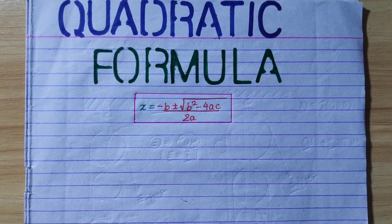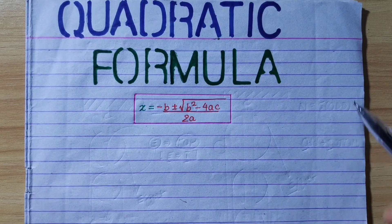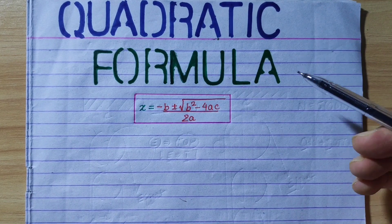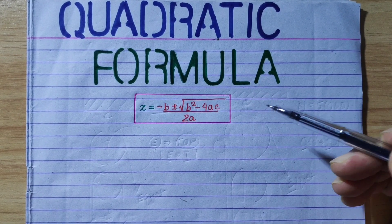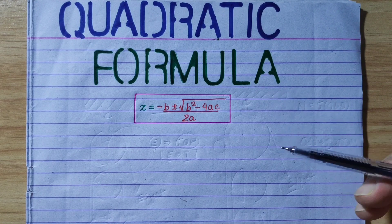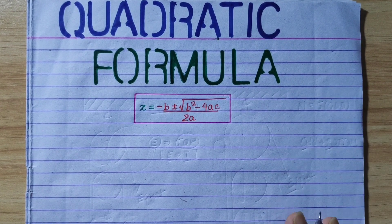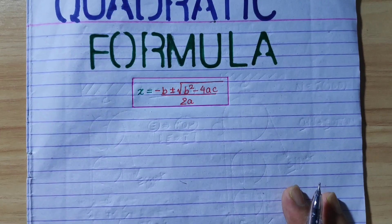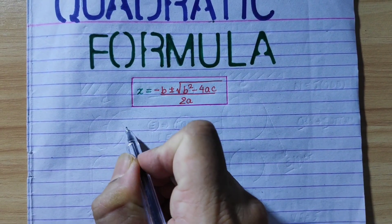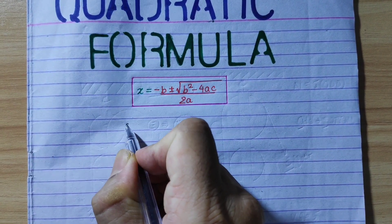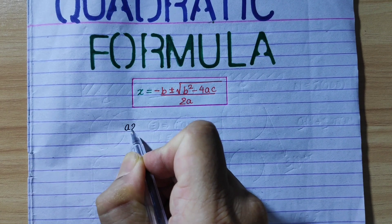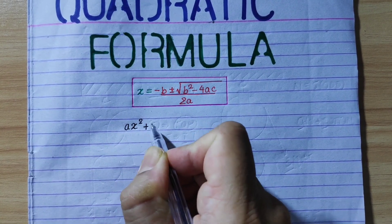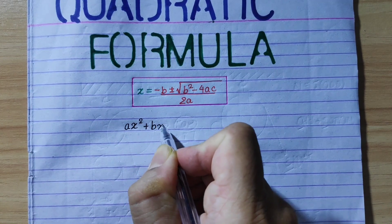Hi everyone. Today we are going to talk about the quadratic formula. So, what do we call a quadratic equation? The equation has the highest power of 2. So, we call it a quadratic equation.